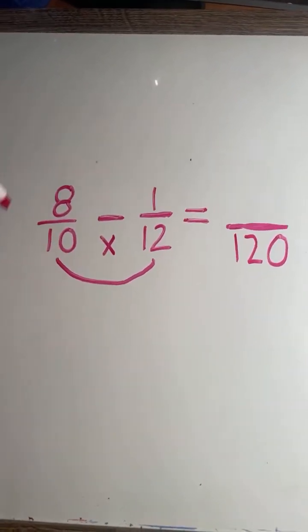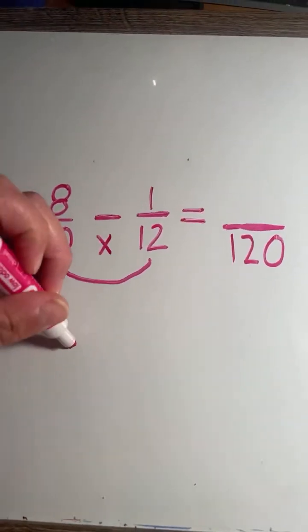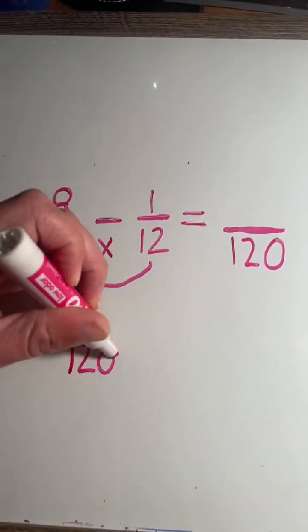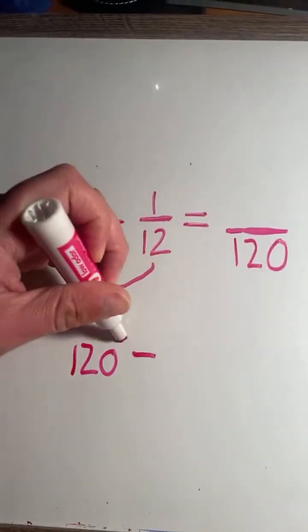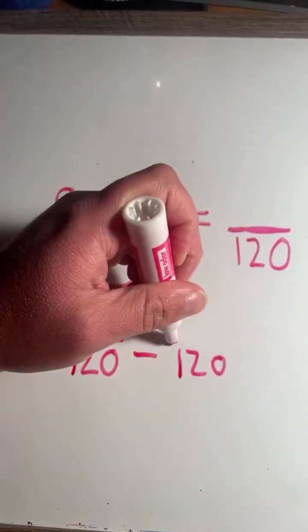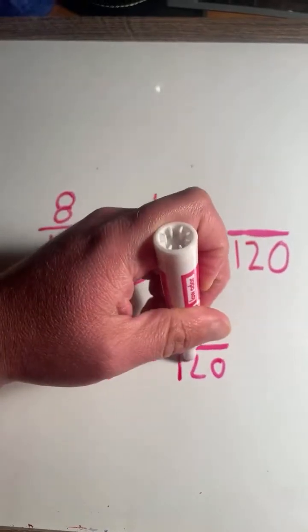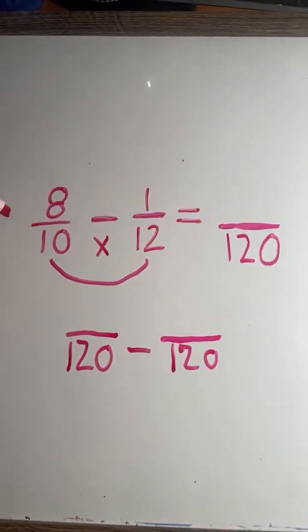So writing everything out... That's our common denominator, 120.